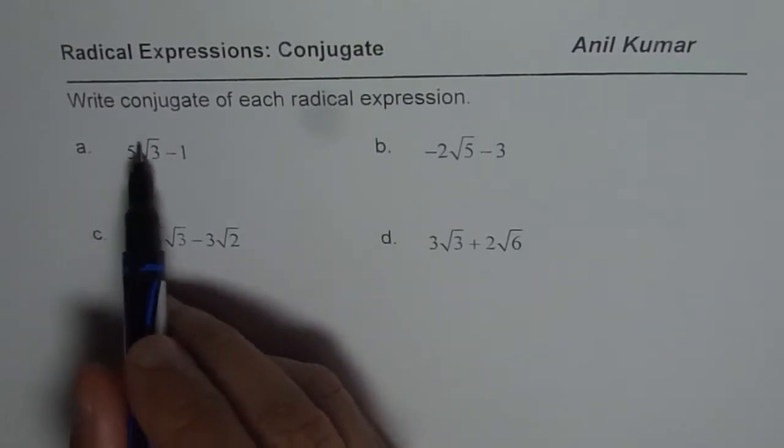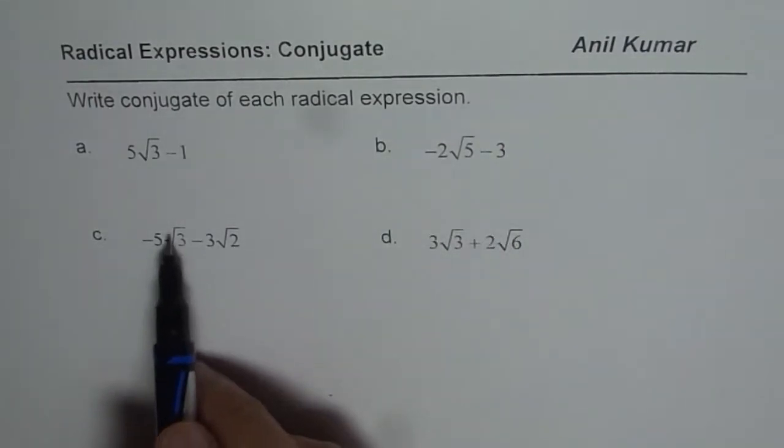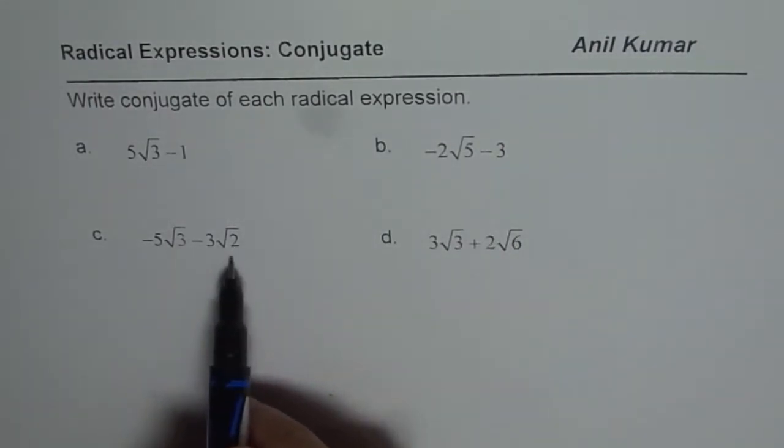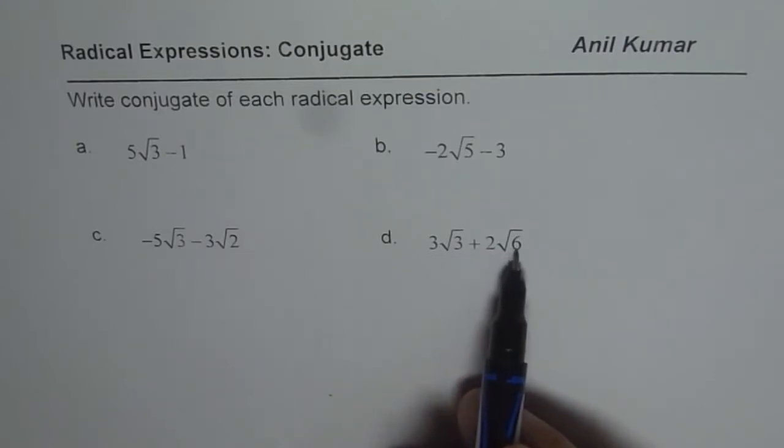So we have 5√3 - 1, -2√5 - 3, -5√3 - 3√2, and 3√3 + 2√6.